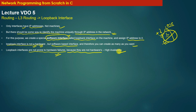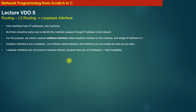High availability means that because loopback interfaces are up most of the time, remote machines can always send a packet to this machine using the loopback IP address as the destination. For example, machine A creates loopback LO1 with IP 12.1.1.1/32, and machine B creates loopback LO1 with IP 13.1.1.1/32.